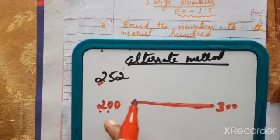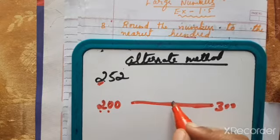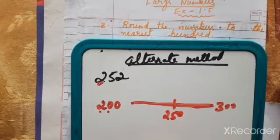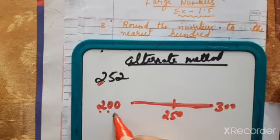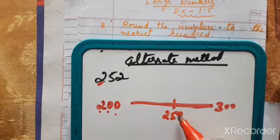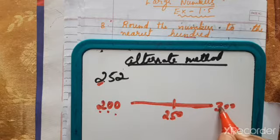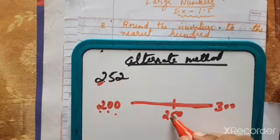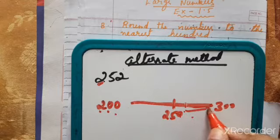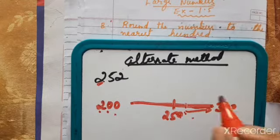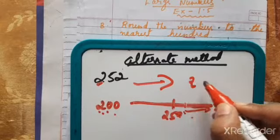The important point is to find the exact middle. Since we are rounding to hundreds, the middle number between 200 and 300 is 250. Numbers from 250 and above are rounded up to 300; numbers below 250 are rounded down to 200. Since 252 is above 250, it is rounded to 300. So 252 is nearer to 300 than to 200.